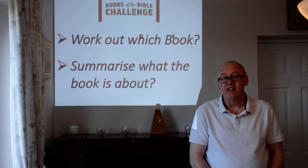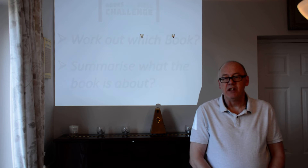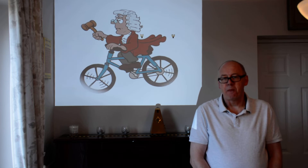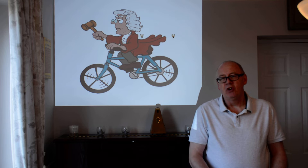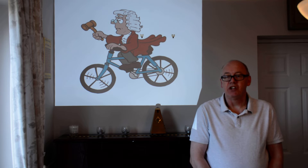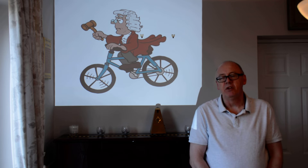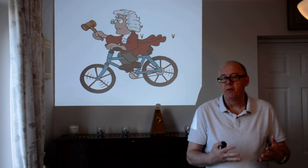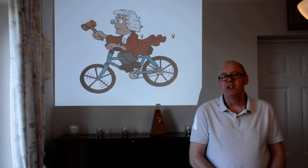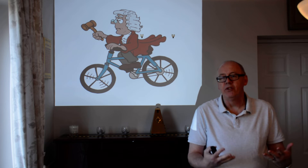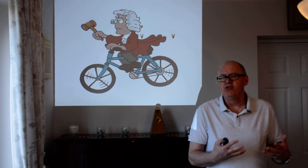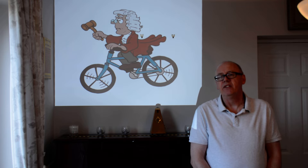We had two pictures yesterday. First of all, picture 23. As you will see, we have a cycling judge. This book reminds us of Judges, which is the seventh book of the Old Testament — Genesis, Exodus, Leviticus, Numbers, Deuteronomy, Joshua, and Judges. This book reminds us of the Judges, which is about the dreadful cycles of events that repeat themselves throughout the book.